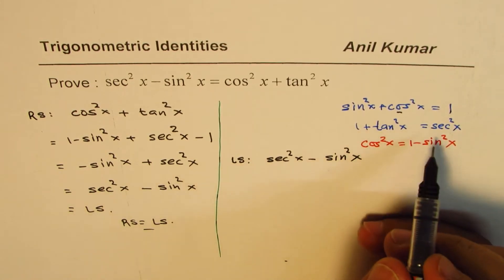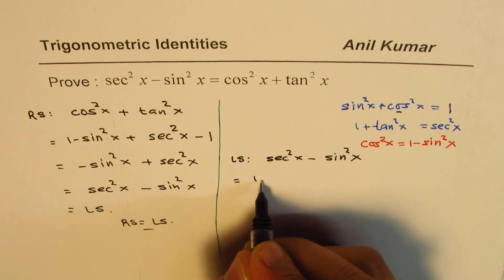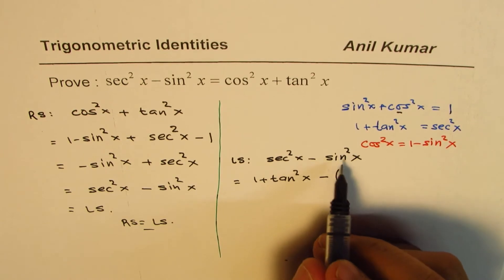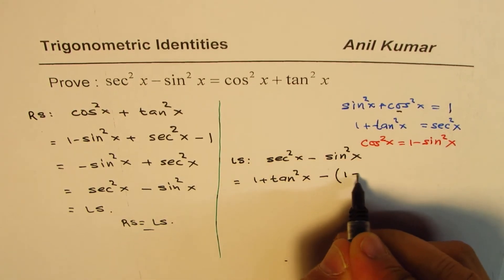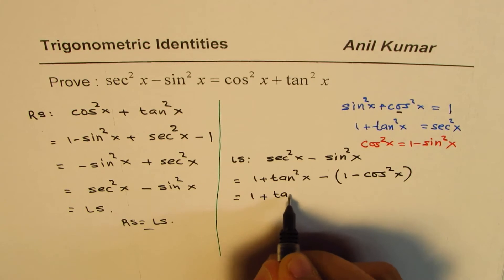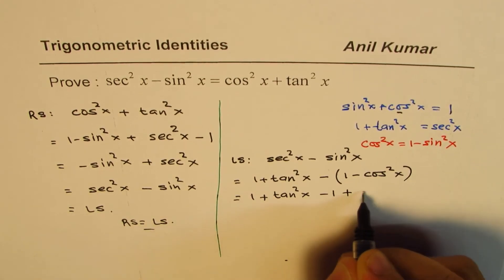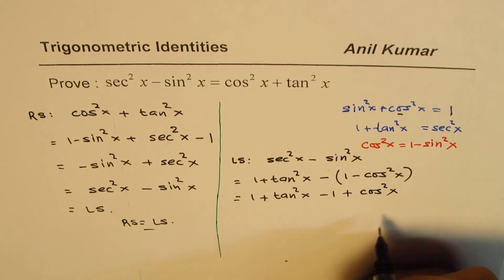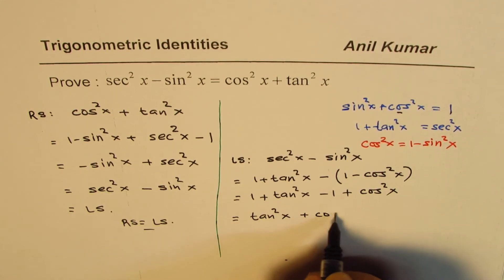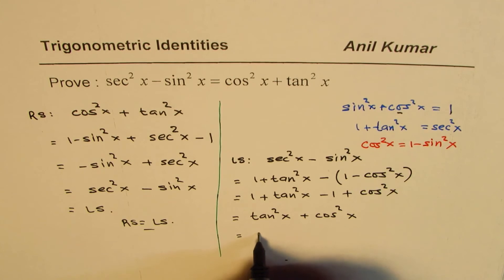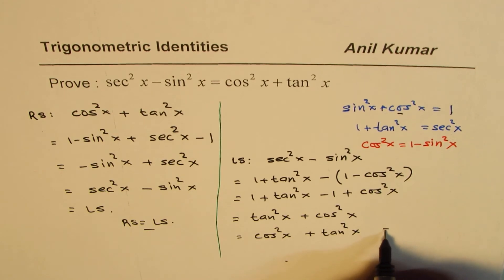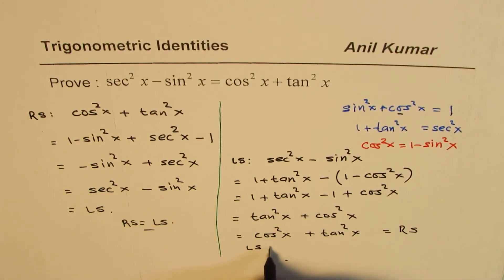Now, secant square x is 1 plus tan square x. So I could write this as 1 plus tan square x minus, in brackets, sin square x which is 1 minus cos square x. That gives us 1 plus tan square x minus 1 plus cos square x. So 1 minus 1 is 0, and what we get is tan square x plus cos square x, or cos square x plus tan square x, which is the right side.